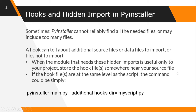When the module that needs a hidden import is only useful to your project, store the file somewhere near your source file — create the source file and your Python file in the same folder. Then by typing: pyinstaller main.py --additional-hooks-dir=myscript.py (you can write myscript.css if your additional file is a CSS file), PyInstaller will recognize your additional file. Your main.py is converted to main.exe and PyInstaller will also recognize your CSS file. In this example I have added myscript.py as an additional file.